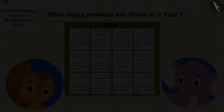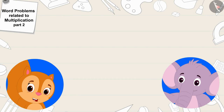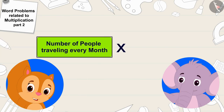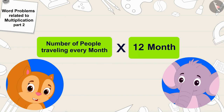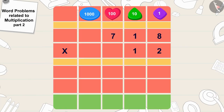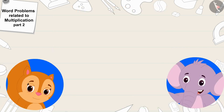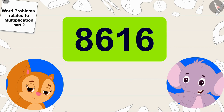Appu, how many months are there in a year? Chanda asked. 12 months, Appu quickly replied. That's correct! So we have to multiply the number of people traveling every month by 12. We will multiply 718 by 12, Chanda said. 718 multiplied by 12 is 8,616. Wow, so many people will use our bus service! Appu happily told Chanda.